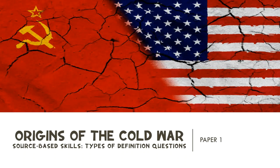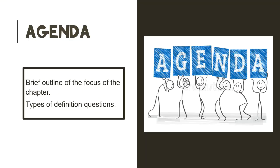Remember, all of the skills that we are revising today will also apply to all of the other topics that we cover in grade 12. So let's start off by briefly taking a look at all of the things that we are going to cover in today's lesson. Firstly, I'm going to give you a very brief outline of the origins of the Cold War and what content you should focus on when preparing for this section. Then for the rest of the lesson we are going to revise your source-based skills, with a focus on how the examiner will ask you to define a concept and what your answers should look like.